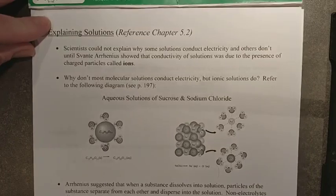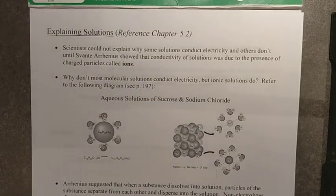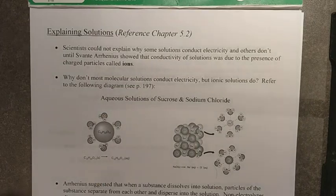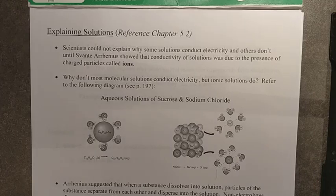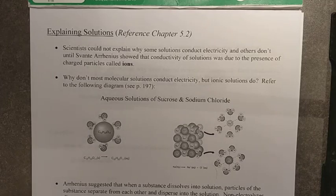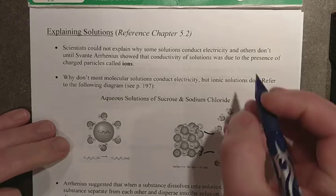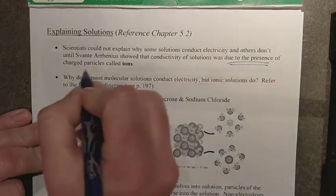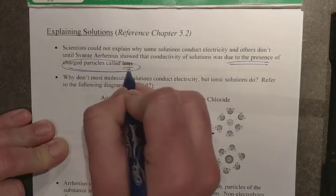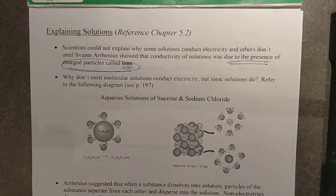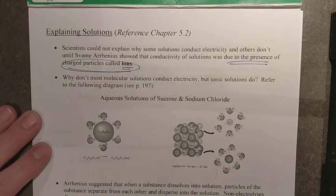So a little bit of background here for us. When we were first identifying various solutions and early chemists were playing with them, such as Svante Arrhenius, he could not quite explain why certain solutions were able to conduct electricity and other solutions were not. What he ultimately was able to find for us was that the conductivity of solutions was due to the presence of charged particles, which you know, called ions. So if we can get ions into the solution, this solution can conduct electricity.